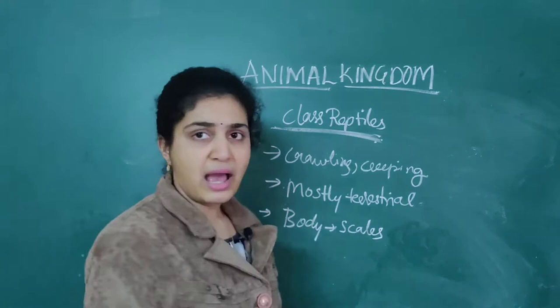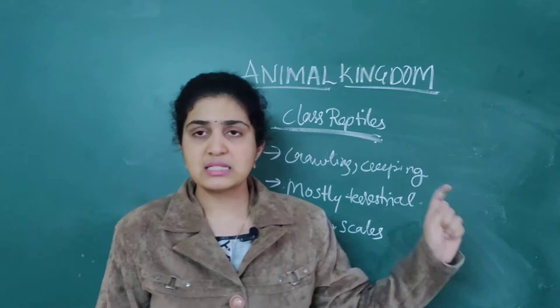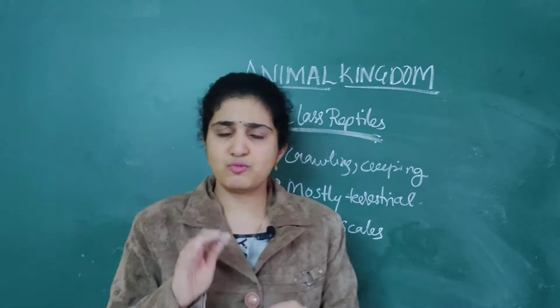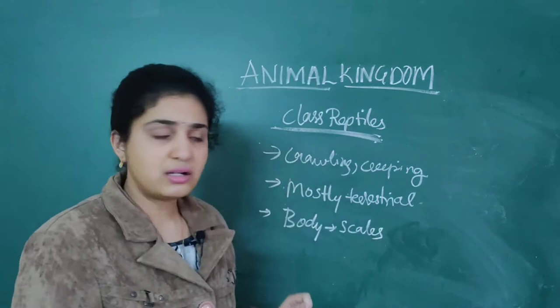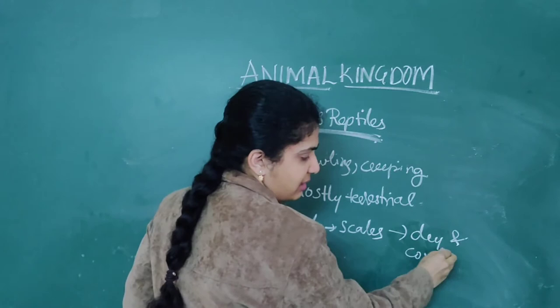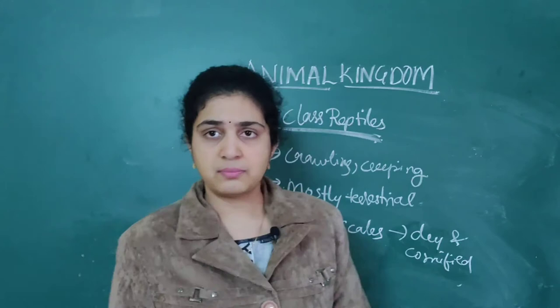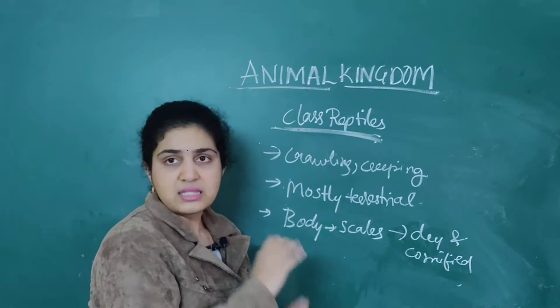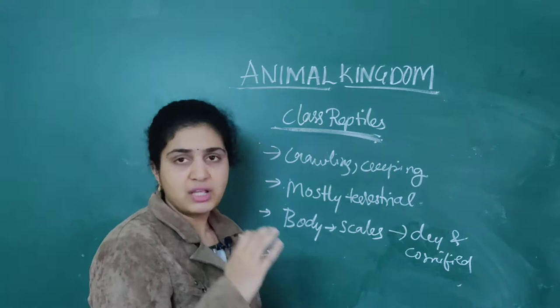When you come to Amphibians, the body is not covered by scales. But in Reptiles, the body is always covered by scales because they have dry and cornified skin, which makes the body very hard to touch. For Amphibians the skin is moist, but for Reptiles it is fully dry and cornified. So we have started with whether they are terrestrial, then moved to the body.